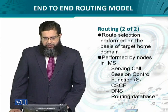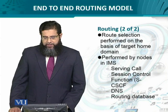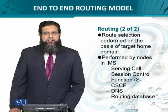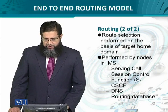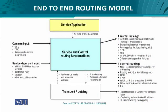The nodes in IMS that we are already familiar with include the serving call session control function, which establishes the link between the calling party and the called party, the DNS, and the routing database. We can summarize the end-to-end routing process starting from the service application — that is, the user sharing the profile parameters to activate or use the service. We have certain options: internal routing scenario or external routing scenario, whether the traffic is sent to the next hop or to the default or gateway router, and routing policies such as load sharing and border gateway protocol policies.